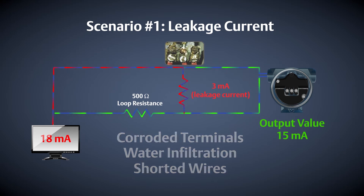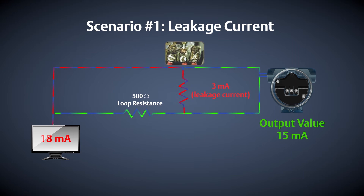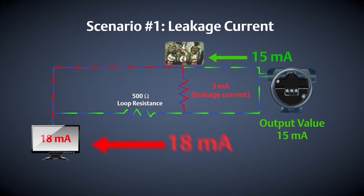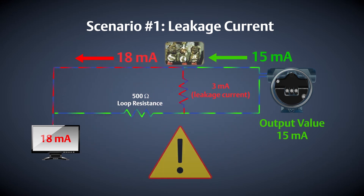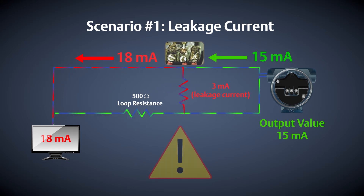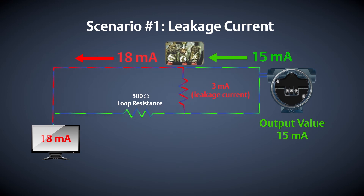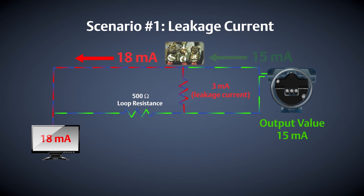Let's assume that leakage current has been created due to one of those factors. This additional electrical path causes a discrepancy between what the transmitter is outputting and what the control system is receiving, resulting in an on-scale failure condition where you could be taking control action on bad information. In this example, the control room is reading 18 milliamps even though the transmitter is outputting 15 milliamps.